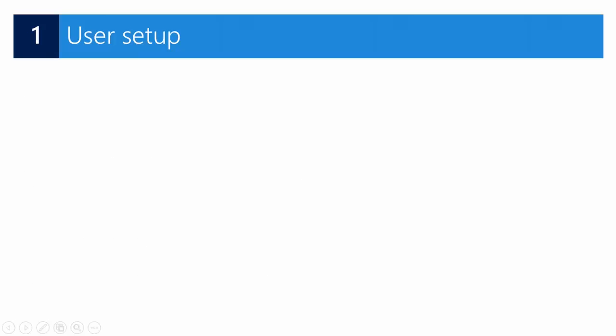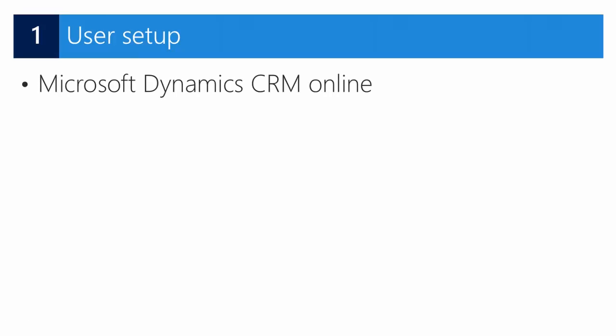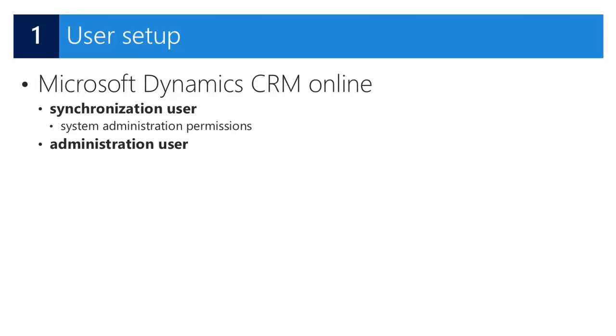As a first step we need to make sure that we have a Microsoft Dynamics CRM Online environment. You can easily set up a 30-day trial. The best practice is to set up two users in CRM Online: one user for syncing and another user used for administration and import of the CRM solution. The administration user needs to have both system administration permissions and solution customizer permissions.